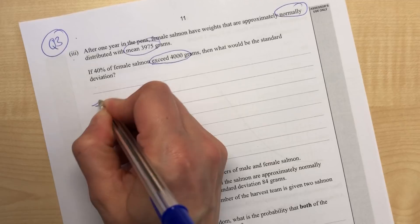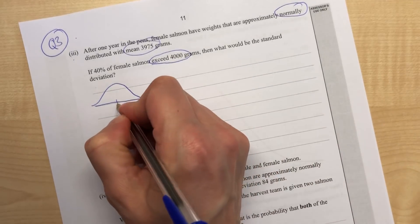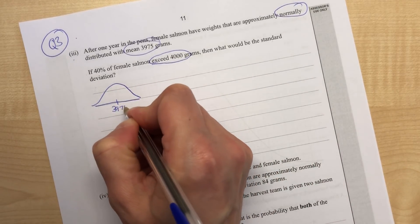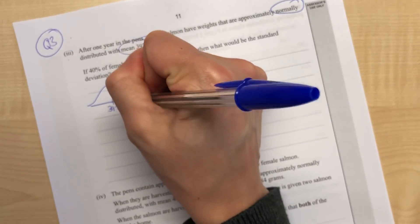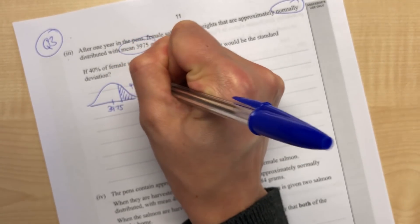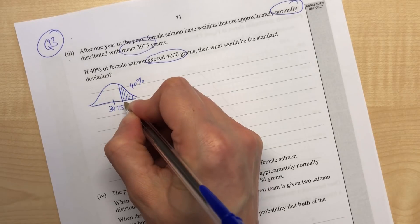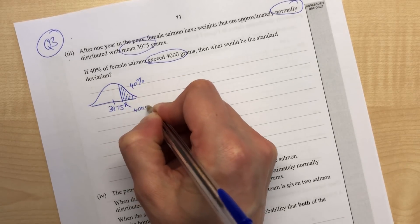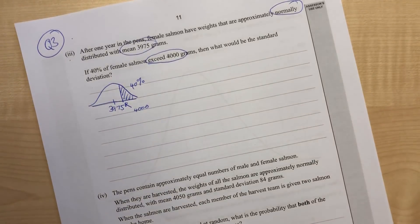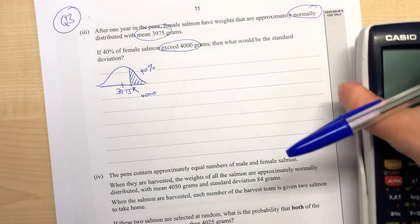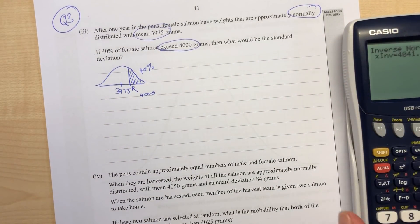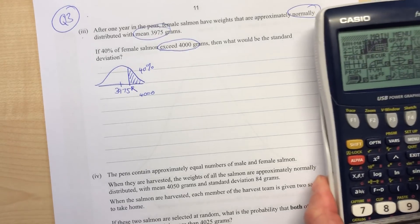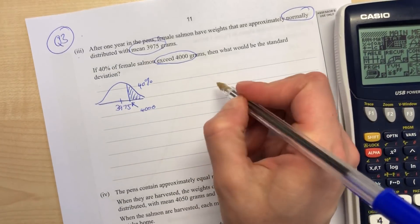So it looks like this: we've got a mean of 3975, and the top 40% were above 4000. We can't go to inverse normal straight away because we don't know the mean and the standard deviation. We can do it on the z-curve.